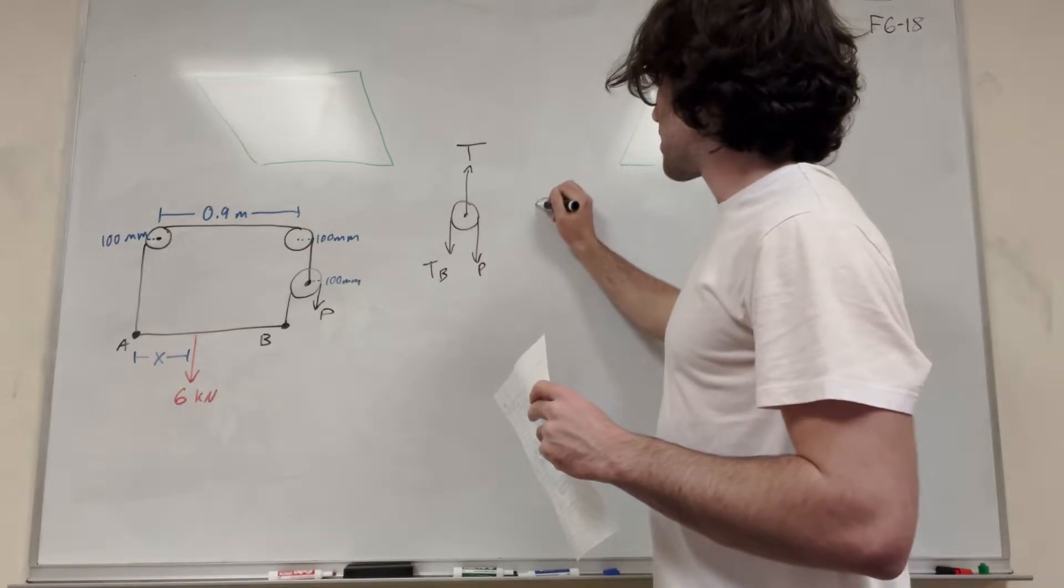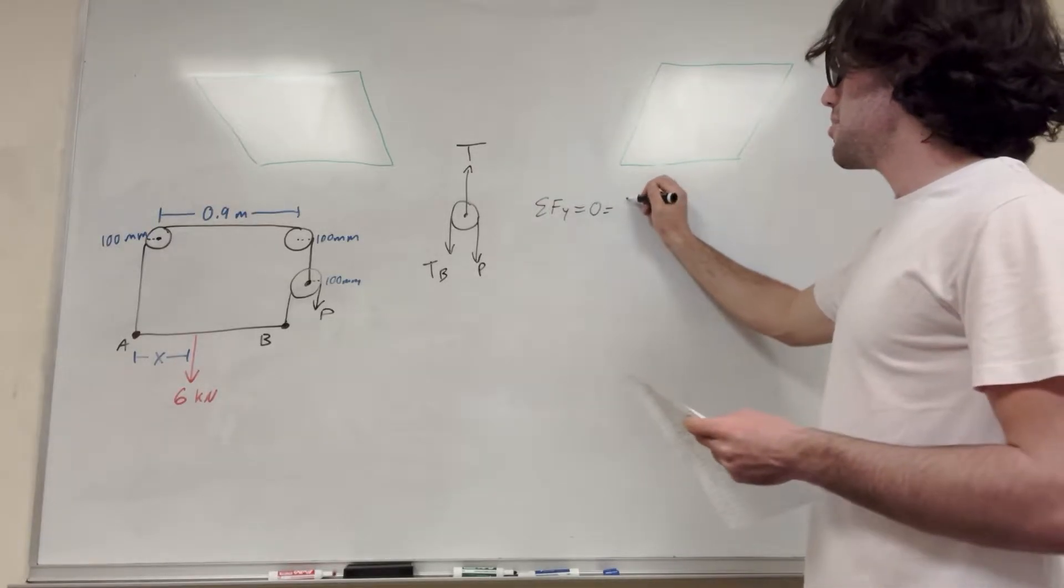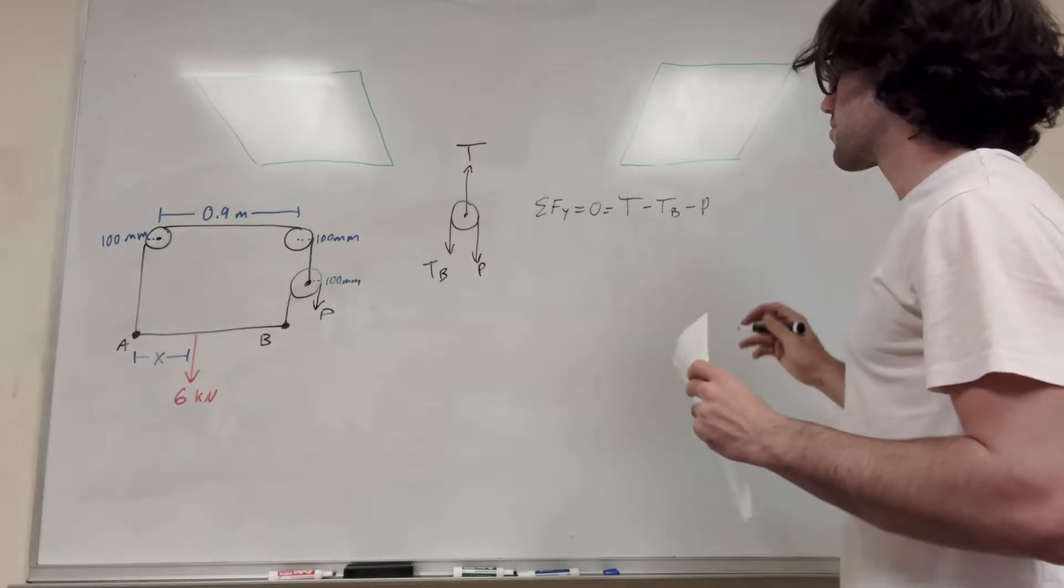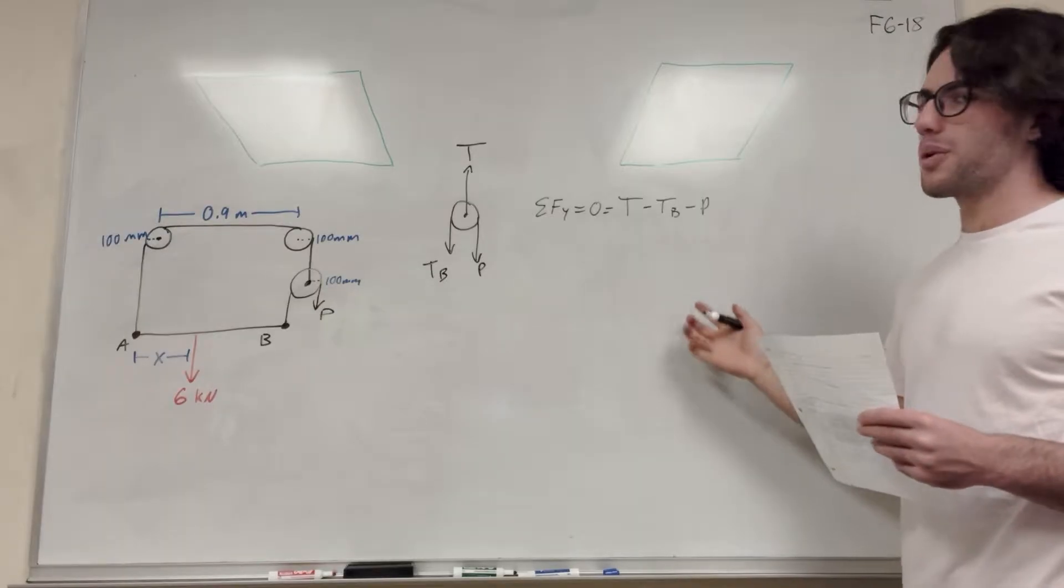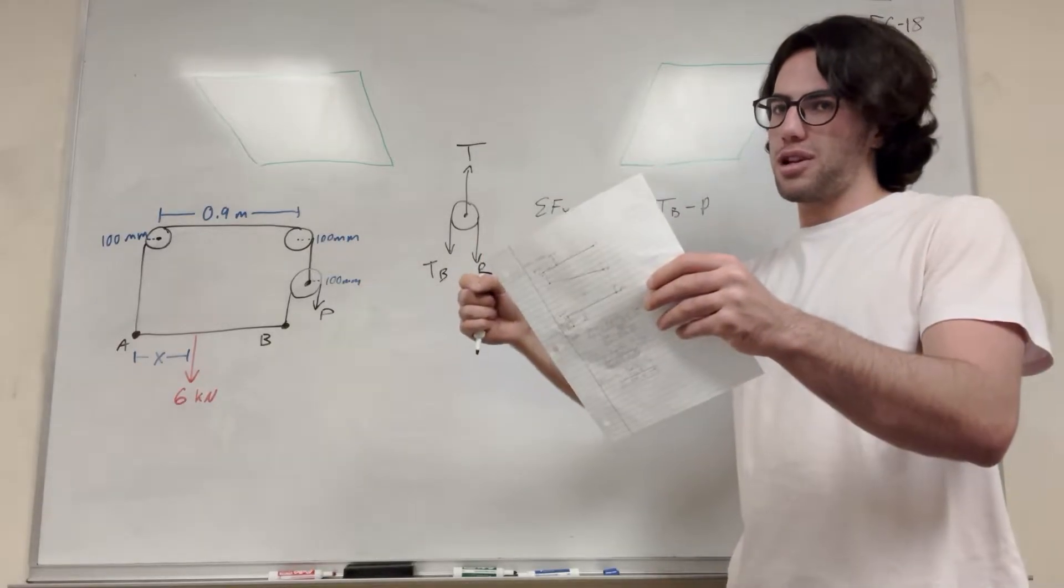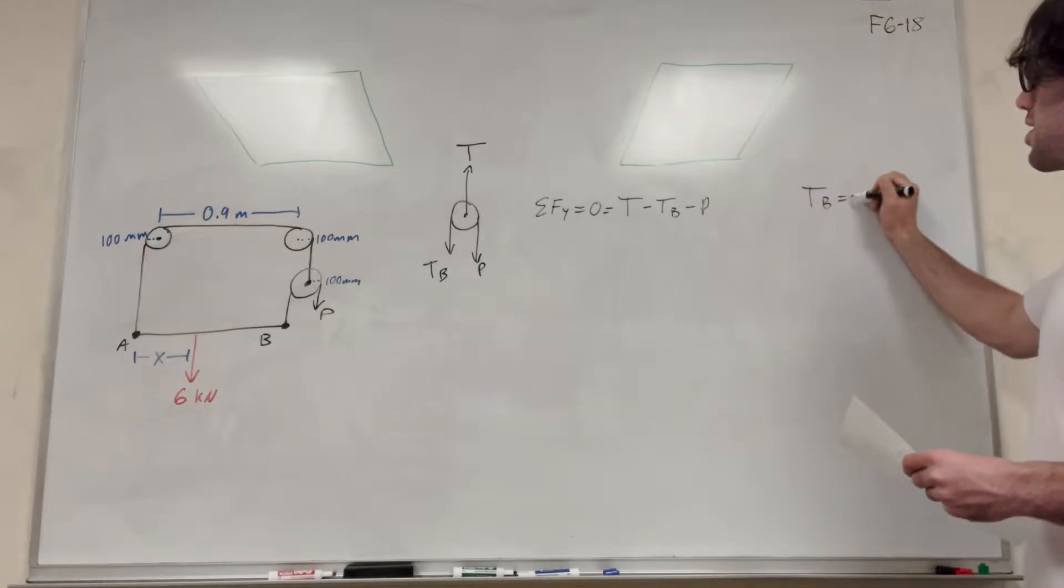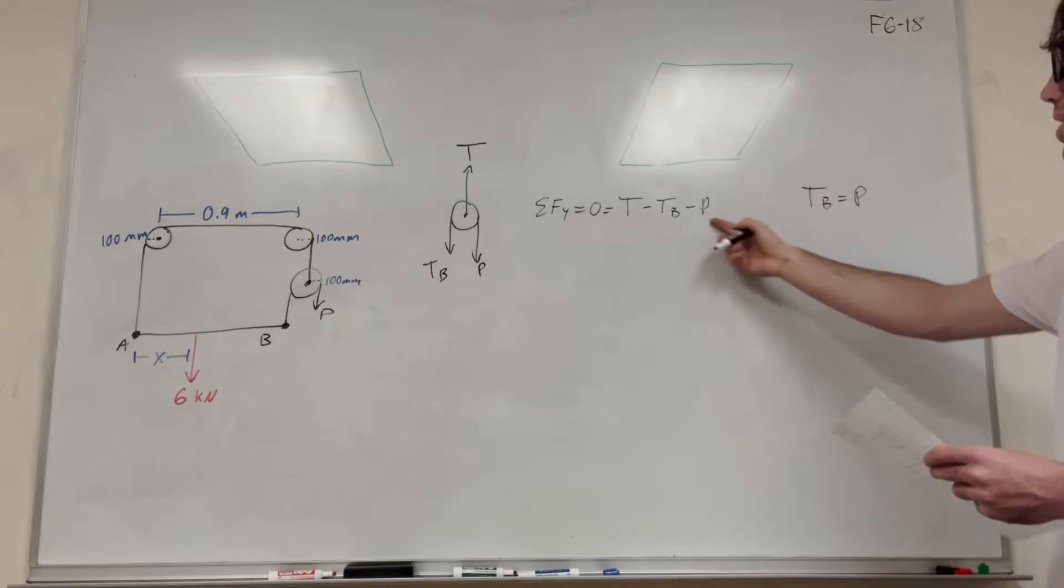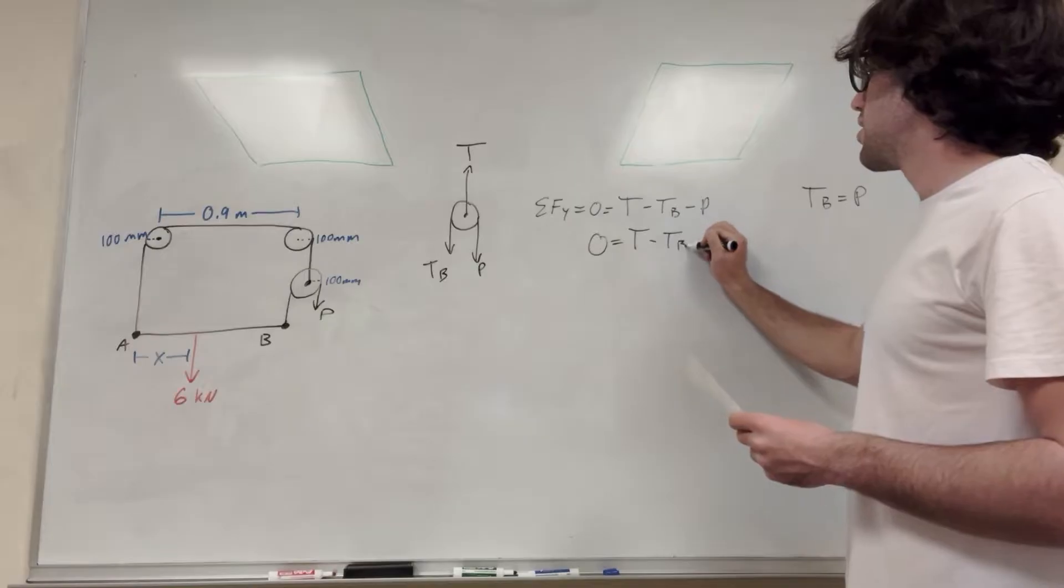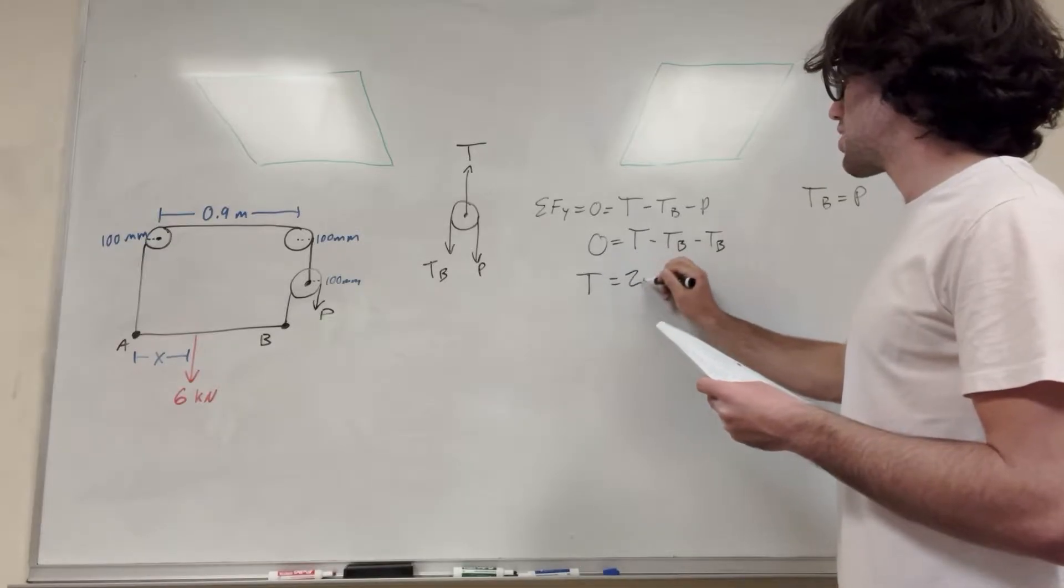So if we have this force diagram system here, we can say that the sum of the forces in the y direction is equal to zero because we know we're at equilibrium. And so it's going to be equal to big T pulling upward minus tension of B minus P. So also what do we know about this? Well, we just said earlier that we know that this tension is going to be the same as this tension. If you pull on a pulley and it's at equilibrium, the tension is going to be the same on both sides. So we know that tension of B is equal to P. So let's go ahead and plug this in here. So then we're going to get zero is equal to T minus tension of B minus tension of B.